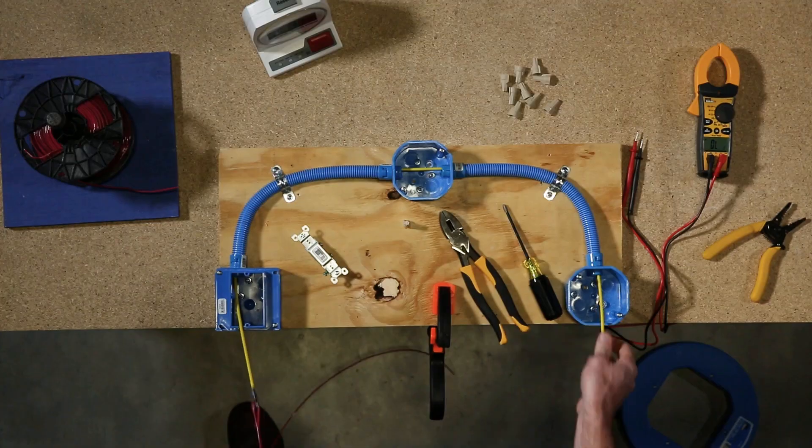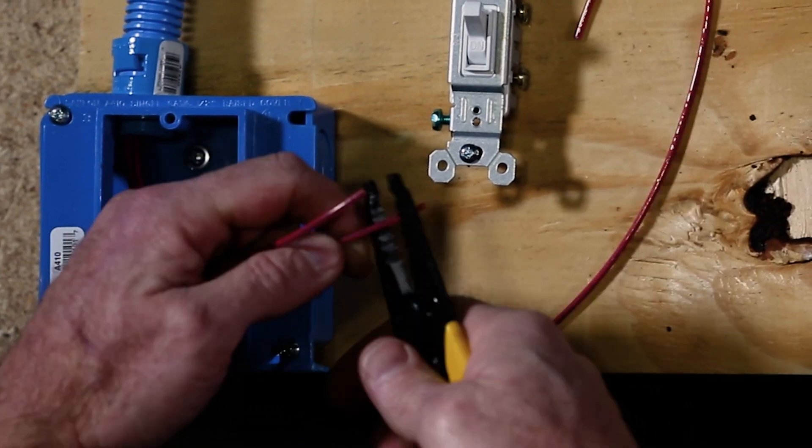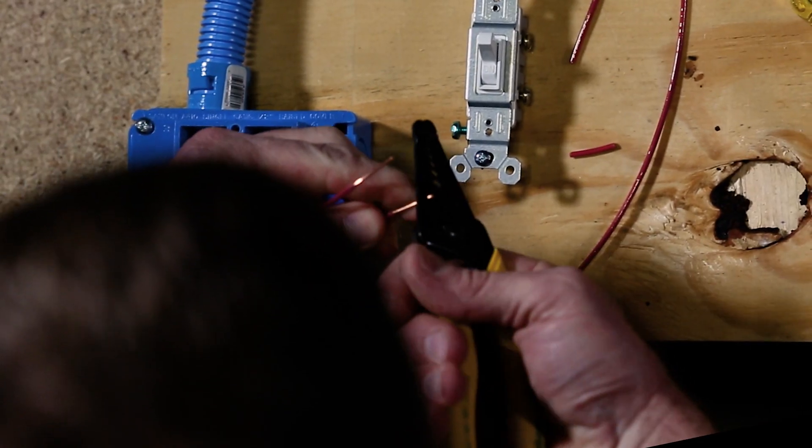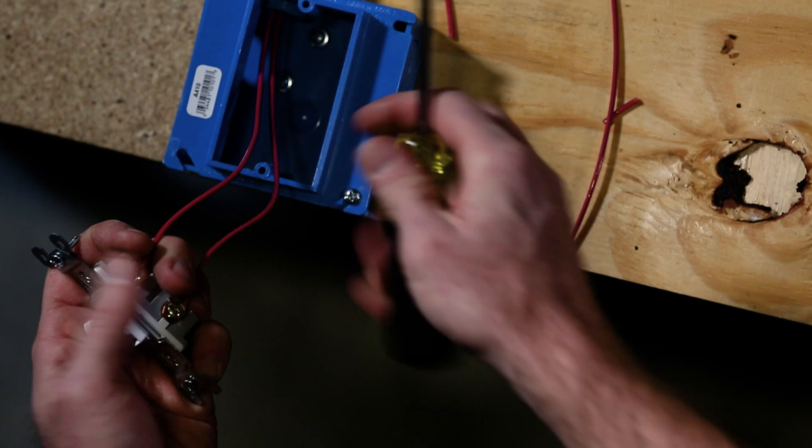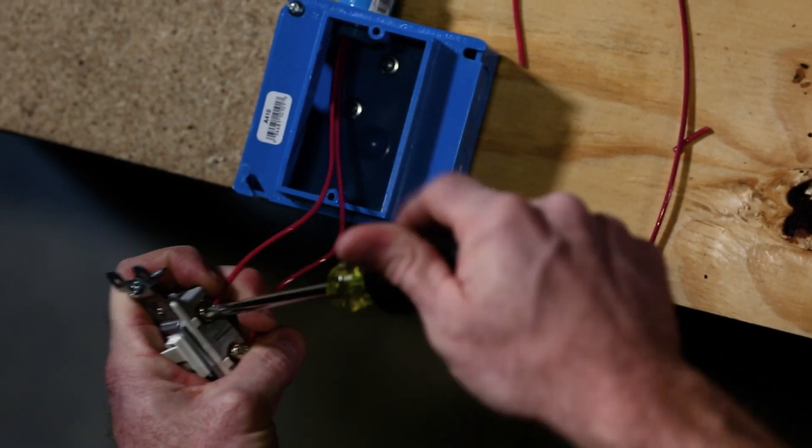Next, pull the wire back through the conduit run. Terminate the switch on box A, and for this challenge there is no backstabbing allowed.